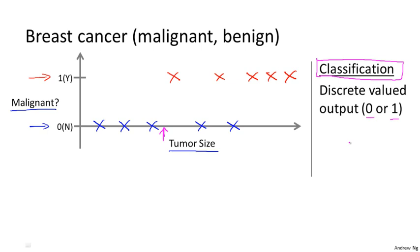And it turns out that in classification problems, sometimes you can have more than two values for the output. As a concrete example, maybe there are three types of breast cancers, and so you may try to predict the discrete value output 0, 1, 2, or 3, where 0 may mean benign tumor, so no cancer.